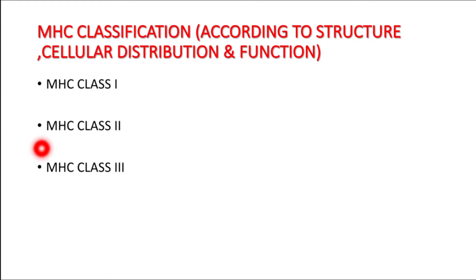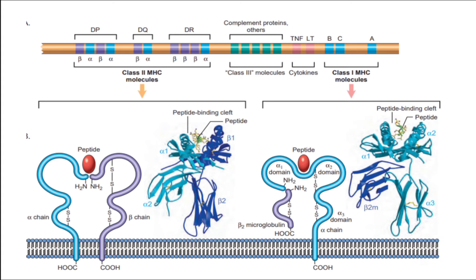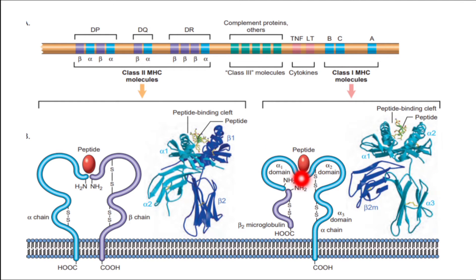According to structure, cellular distribution, and function, MHC molecules can be classified into three classes: MHC class 1, 2, and 3. The MHC class 1 molecule is made up of an alpha chain and a beta-2 microglobulin chain, as seen in the diagram. The alpha chain has alpha 1, alpha 2, and alpha 3 domains (shown in sky blue), and the violet color represents beta-2 microglobulin. The antigen binding site is present between the alpha 1 and alpha 2 domains on the alpha chain.